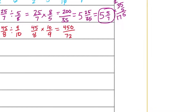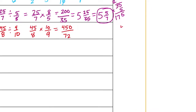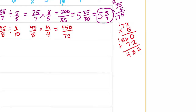Let's see how many times seventy-two can go into four hundred fifty. Seventy-two times six is four hundred thirty-two. So it goes in six times. Four hundred fifty minus four hundred thirty-two is eighteen, so we have eighteen seventy-seconds remainder, giving six and eighteen seventy-seconds. If we reduce that, eighteen and seventy-two are both divisible by eighteen, giving six and one-fourth.